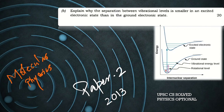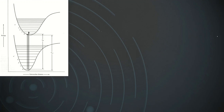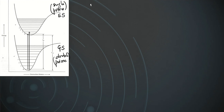Let's start with the solution. This is the ground state potential well and this is the excited state potential well. We are going to represent the ground state with a double prime and the excited state with a single prime. We are dealing with vibronic transitions, meaning there is an electronic transition plus a vibrational transition.